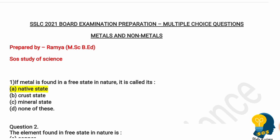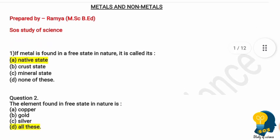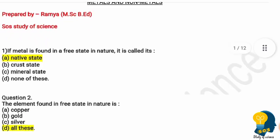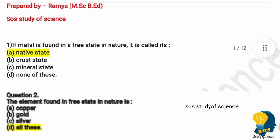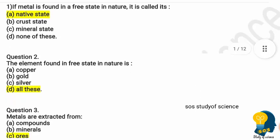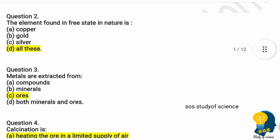In today's video, let us look at the multiple choice questions from the lesson metals and non-metals. Question one: if the metal is found in the free state in nature, it is called its native state. The correct answer is option A.